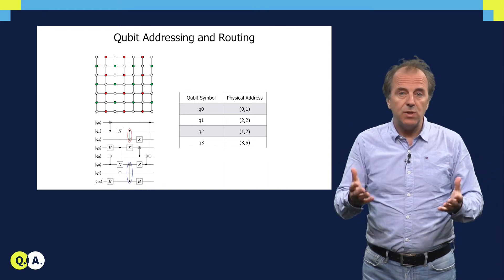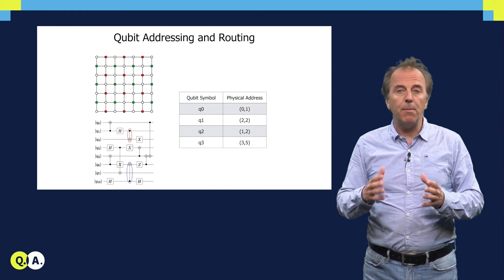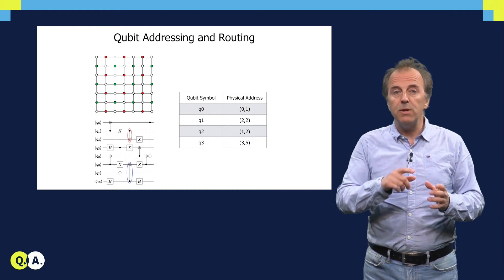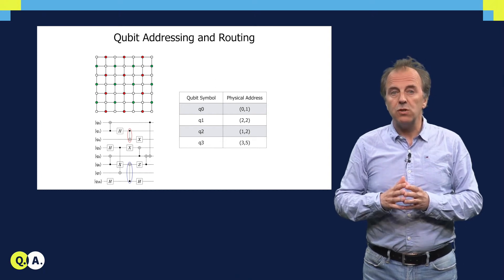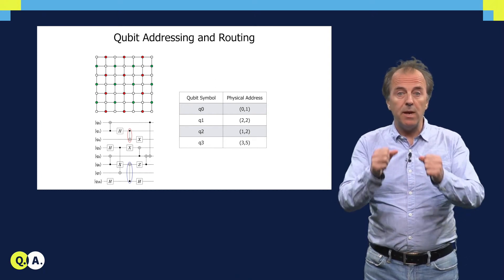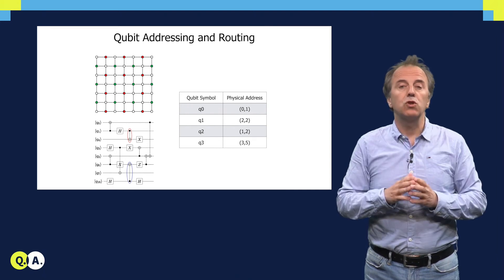This addressing table is crucial for accommodating the routing mechanisms which move qubits around to enable two qubit operations which require the qubits to be nearest neighbor, to be as close as possible.